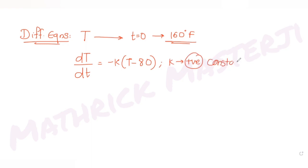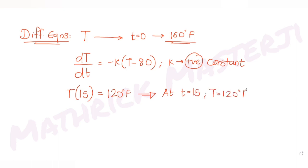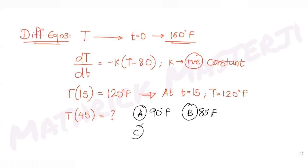Further, the question says T(15) — meaning at time t equals 15 — the temperature is 120 degrees Fahrenheit. The question is asking us to figure out T(45). The answer choices given are: 90 degrees Fahrenheit, 85 degrees Fahrenheit, 80 degrees Fahrenheit, and 95 degrees Fahrenheit. We need to figure out which one is correct.